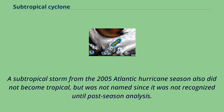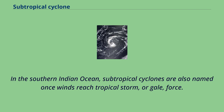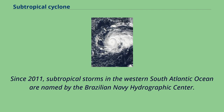A subtropical storm from the 2005 Atlantic hurricane season also did not become tropical, but was not named since it was not recognized until post-season analysis. In the southern Indian Ocean, subtropical cyclones are also named once winds reach tropical storm or gale force. Since 2011, subtropical storms in the western South Atlantic Ocean are named by the Brazilian Navy Hydrographic Center.